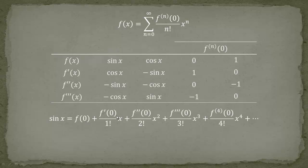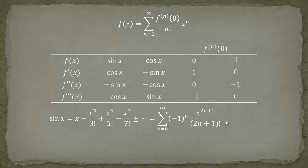So what we see is we only have odd powers — odd powers divided by odd factorials. The sine is alternating: the third derivative at 0 is equal to minus 1, so we have minus x cubed over 3 factorial. If we write it down: sine of x equals x minus x cubed over 3 factorial, then because it's an alternating sum, plus x to the 5 over 5 factorial, minus x to the 7 over 7 factorial, and so forth.